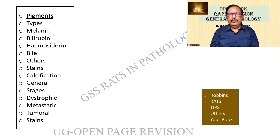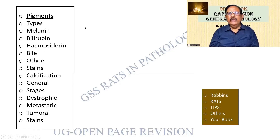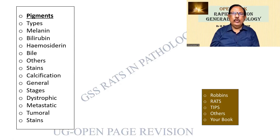Pigments — it can come as a short essay. Usually a long essay is not there, but they can ask any of these things. Melanin, hemosiderin — very commonly asked. Bile can also come. So these are the things you people will have to know. The important pigments are there — define a pigment, what can be exogenous, what is endogenous, produced by the body, etc. And in which you have got melanin, bilirubin, etc.